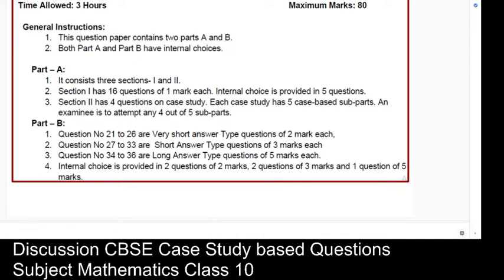This information is available on the CBSE website. In class 10, the question paper will have two parts: Part A and Part B. Part A consists of two sections. Section 1 will have 16 questions of one mark each with internal choice in five questions. Section 2 will have four case study based questions, each with five sub-parts. An examinee must attempt four out of the five sub-parts.